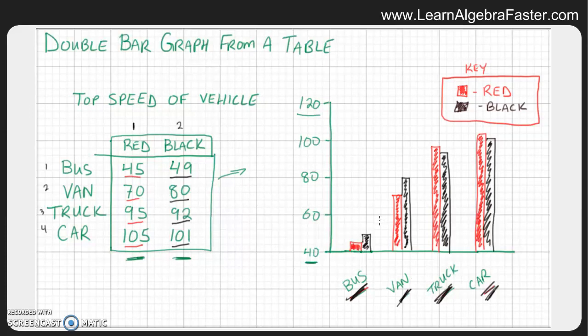Now, when you make a double bar graph, really the most important part is this key. And the reason for that is it shows you what different colors of bars represents. So in this case, I kind of did this on purpose where the red color shows the red vehicles and the black color shows the black vehicles. That's way easier to see. But it could be, you know, this year's model versus last year's model. It could be cars in California versus cars in New York. It could be lots of different things. But the key is really important for double bar graphs.